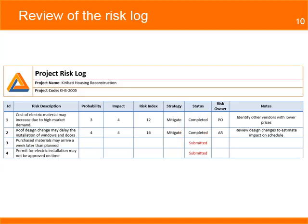Two risks are new and marked as submitted. They need an analysis and assessment of the risk levels of probability and impact, selection of the strategy, assignment of a risk owner, and an estimate for the risk contingency budget.